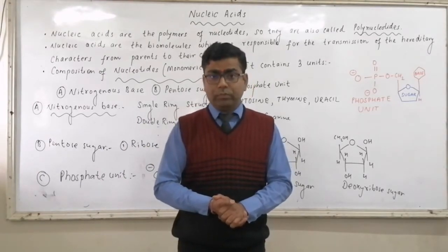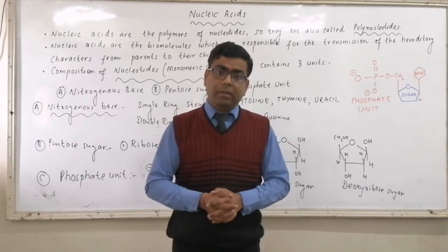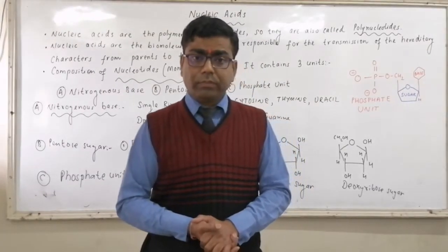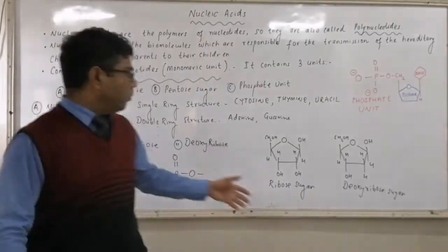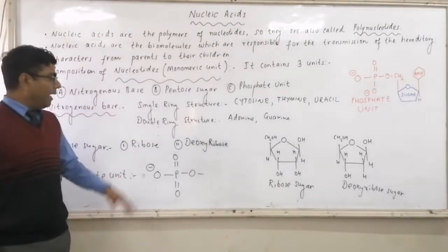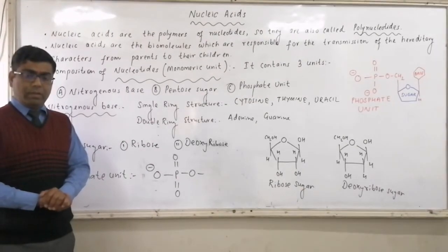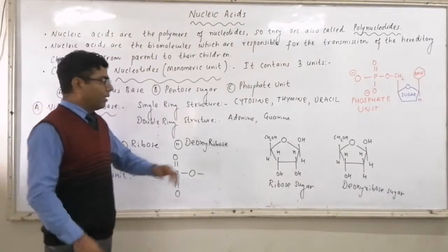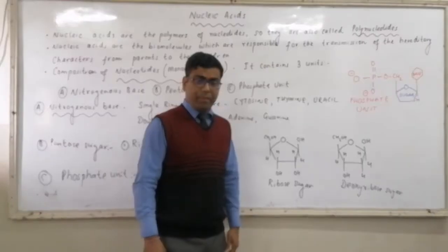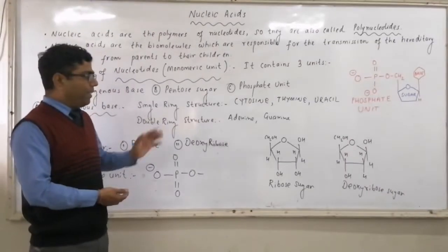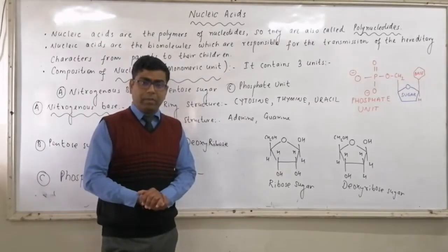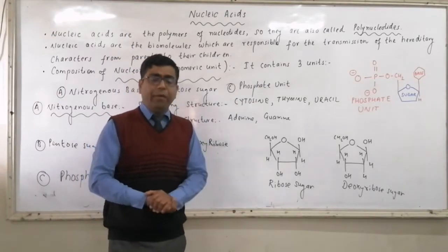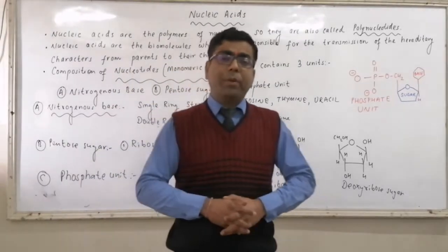These nitrogenous bases may contain a single ring or a double ring structure. In the single ring structure we have cytosine, thymine, and uracil. In the double ring structure we have two bases: adenine and guanine. So in total there are five nitrogenous bases, out of which four are involved in the formation of any given nucleic acid.